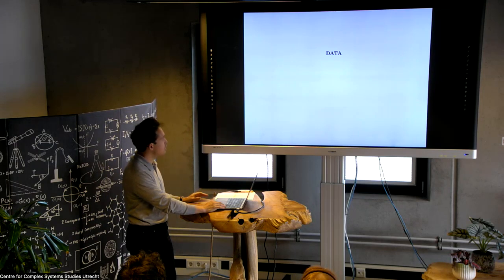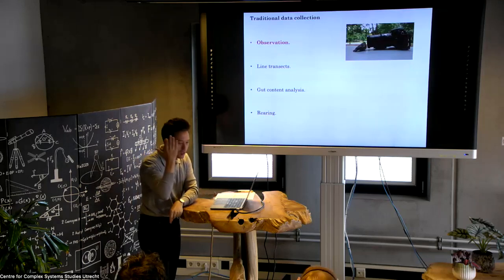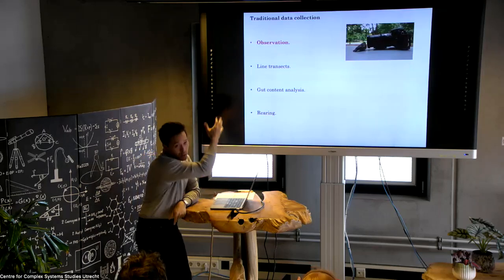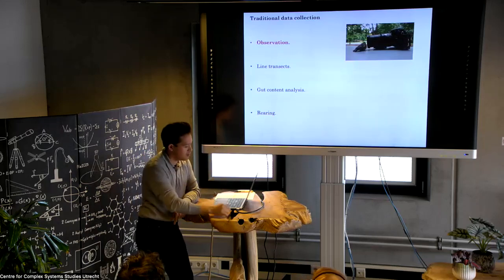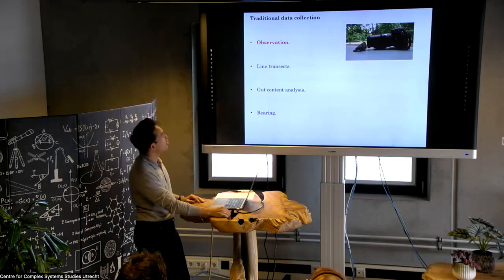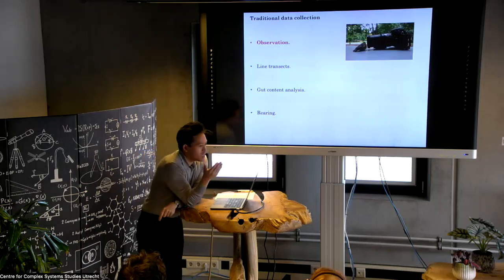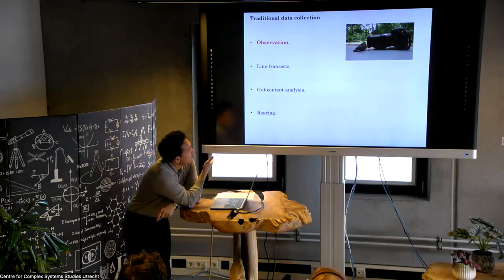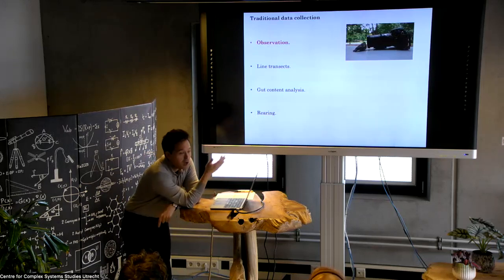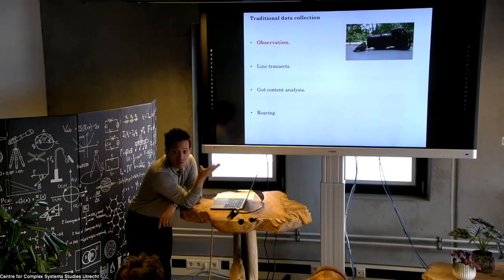Let's begin with data. Somebody asked yesterday about how you collect network data in the first place, so I'll give a brief overview before going into the emerging directions. The bread and butter of ecological network data are observations. The field really started, as with most fields in ecology, with people just observing nature and then documenting what they see. You can collect food web data relatively easily by just sitting somewhere and looking to see what is around and what is eating something else.